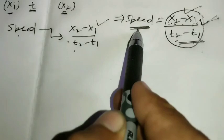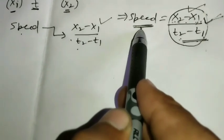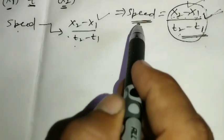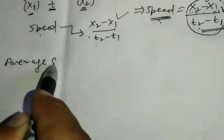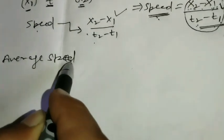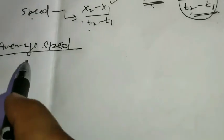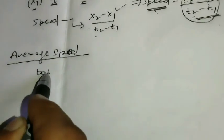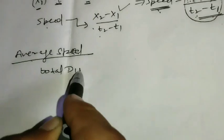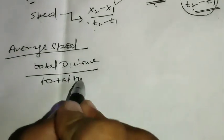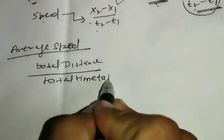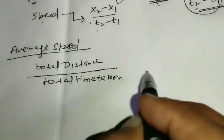And the speed is independent. So, let me talk about the average speed. How much is the average speed? Total distance traveled by total time taken. Total distance traveled x2 minus x1 and total time taken t2 minus t1.